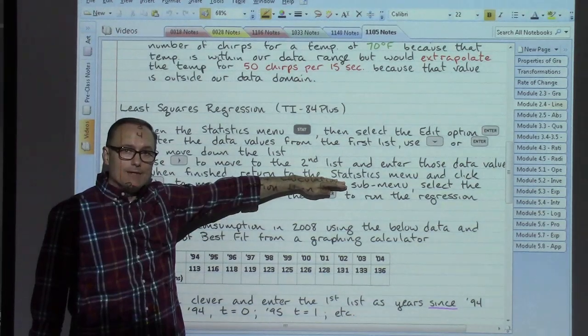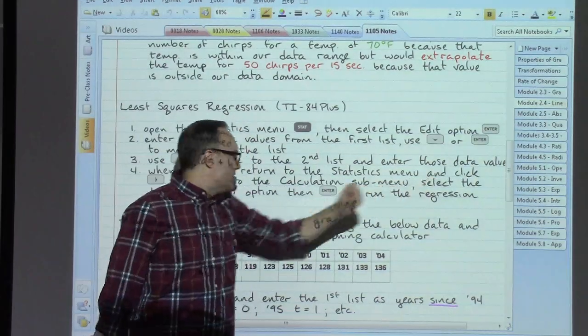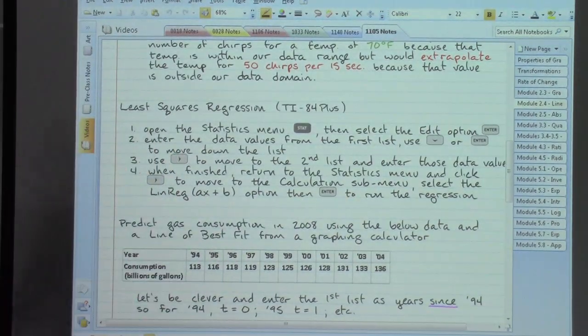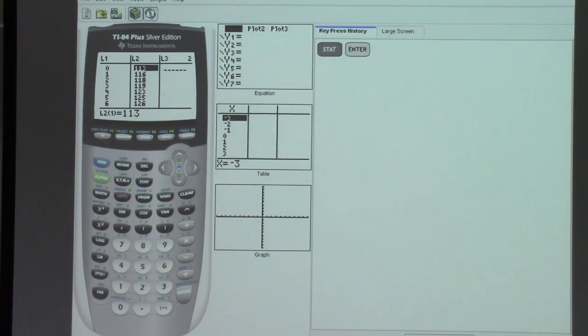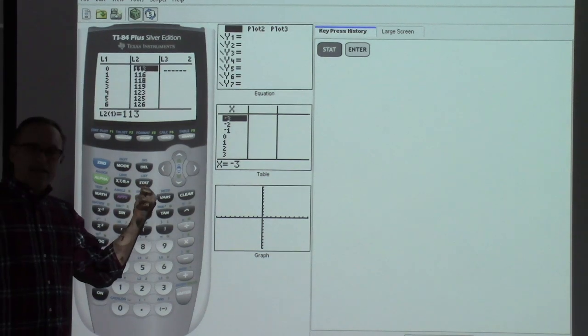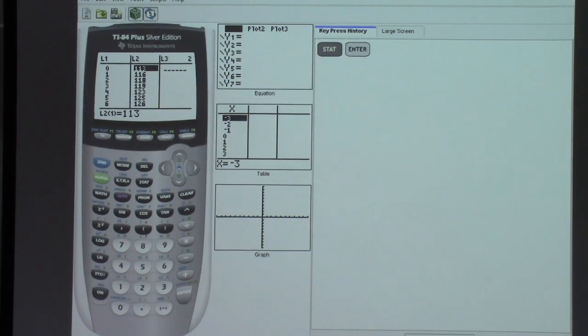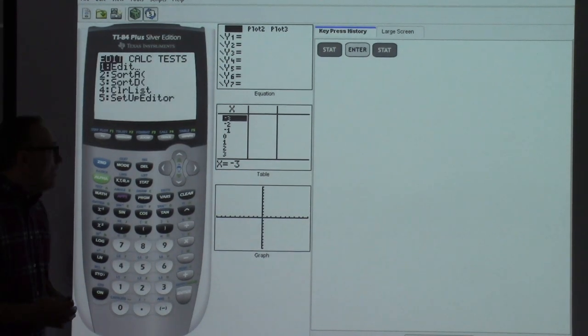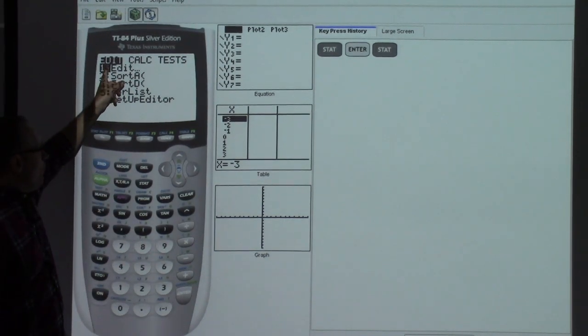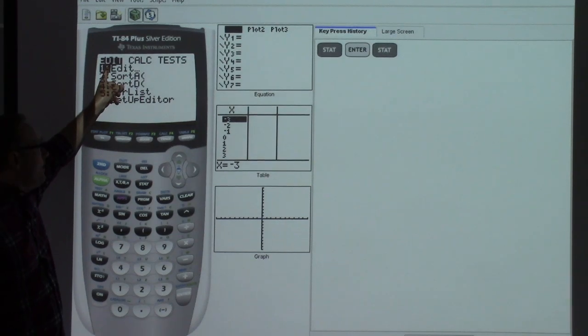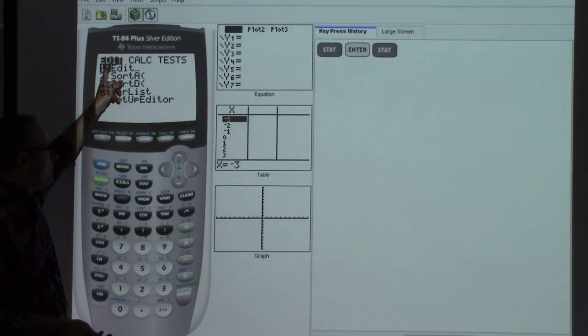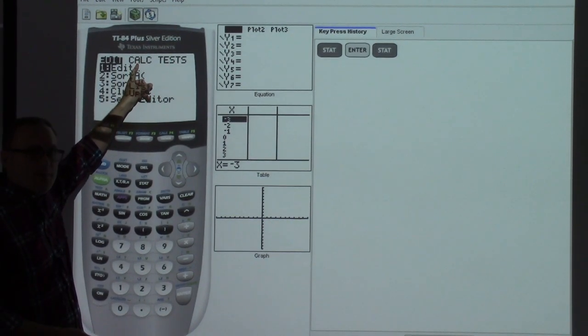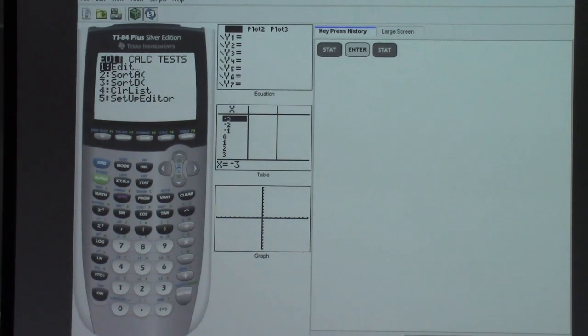When finished, we're going to come back to the statistics menu. So we're going to hit that STAT button again and click the right arrow to move to the calculation submenu. Let's just pause on those instructions, come back to that calculator. We're in our list. We can just automatically hit that STAT button again. There's no funny business that's going to happen with doing that. It'll just automatically bring us right back to our STAT menu. But while we started out with the edit, we now want to go on to the calculation options.